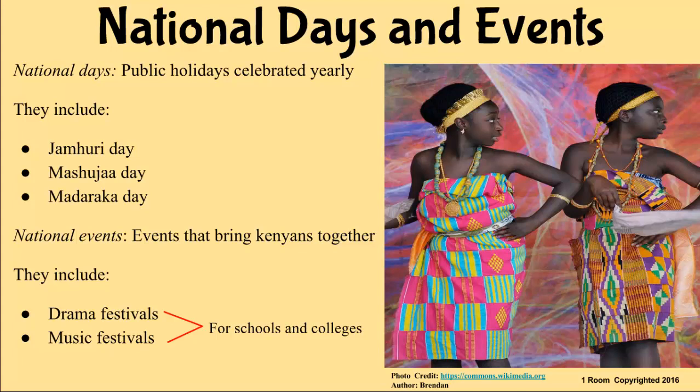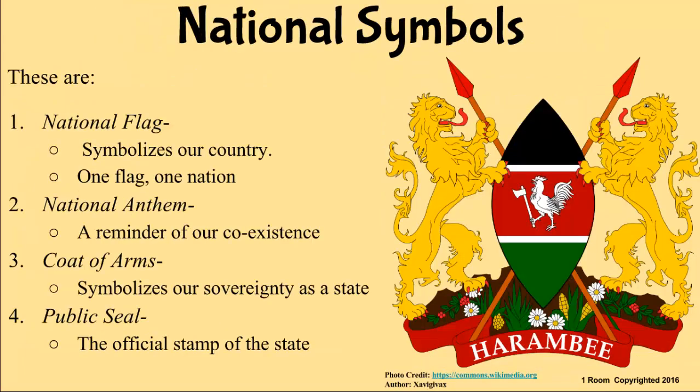Every day, we celebrate our heroes. In all these occasions, Kenyans of all walks of life come together to celebrate. Other national events that unite Kenyans are music and drama festivals for schools and colleges. And on these days, the national anthem is always sung to grace the event. There is a line in the national anthem that goes like, 'May we dwell in unity, peace and liberty.' That speaks volumes. Our national anthem, the national flag, the coat of arms and the public seal are all symbols of national unity. Coat of arms? It is a symbol of our existence as an independent state.